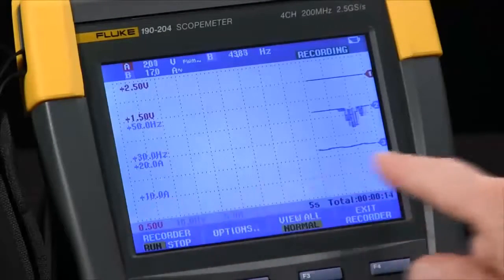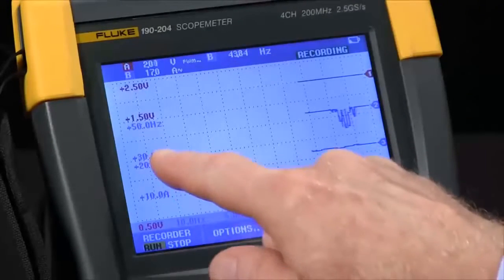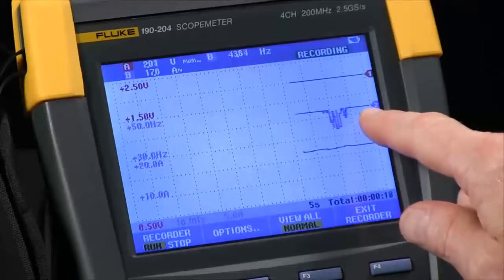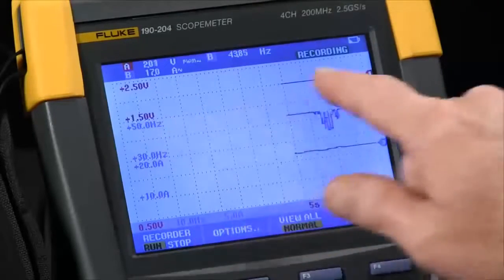You can see your amperage is the bottom trace, your frequency on channel B is the middle one, and your voltage being the top.